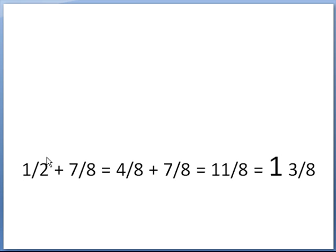Here is the answer worked out. You cannot add halves and eighths, so you have to turn the halves into eighths. One-half and four-eighths are the same thing. Then simply add four plus seven, which is eleven. This is an improper fraction — divide eight into eleven, it goes one time with three left over, so it's one and three-eighths. Check: eight times one is eight, plus three is eleven — eleven-eighths. It checks.